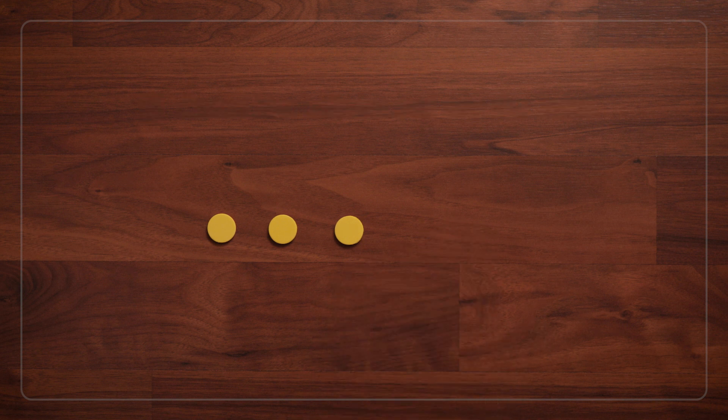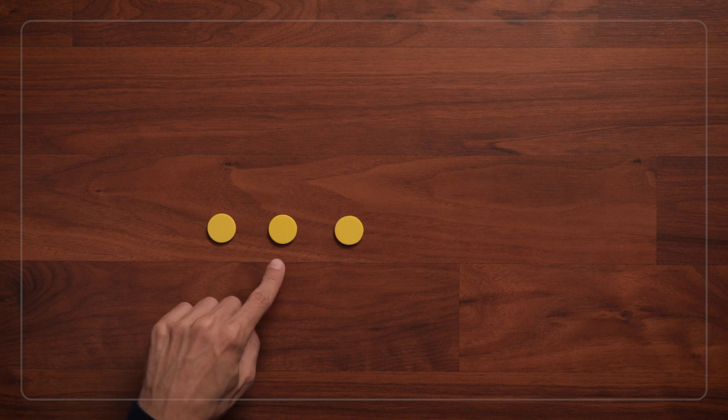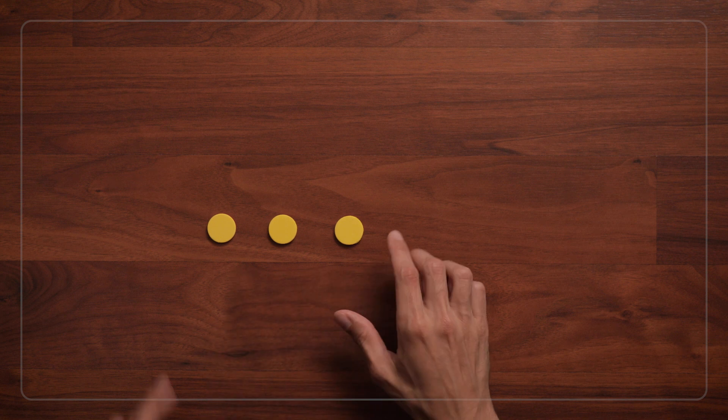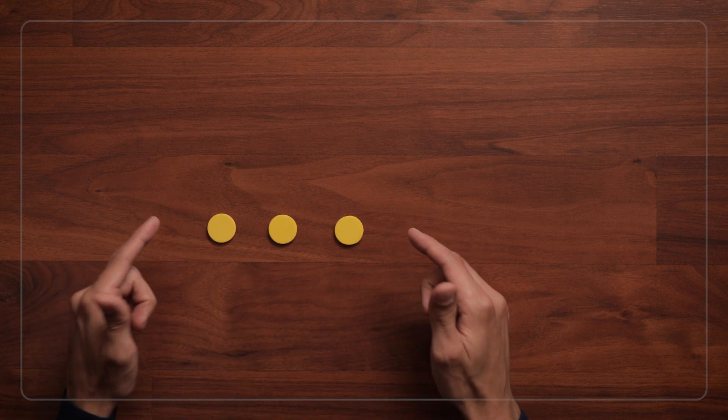And you'll notice I both counted the number of tokens, one, two, three, and then said the total number of tokens. Counting and then saying how many in all helps children see that the last number you count represents the set size.